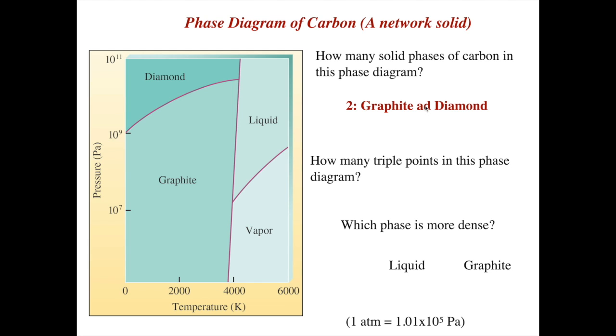How many triple points do you see in this diagram? There are two. You have one up here, which is a triple point between the liquid phase, diamond, and graphite. And there's another one between liquid, gas, and solid graphite down here. So you can have more than two triple points.